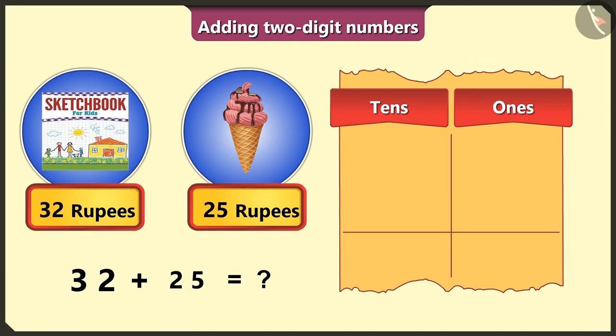So we will write it in the tens box. Hmm, okay. From 32, we write 3 in the tens box and 2 in the ones box.